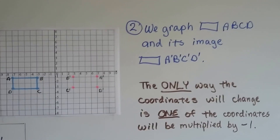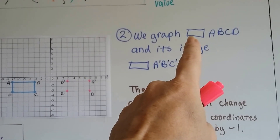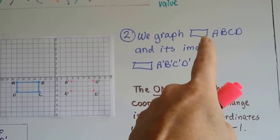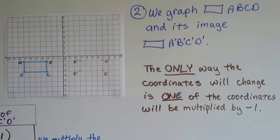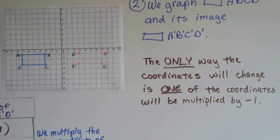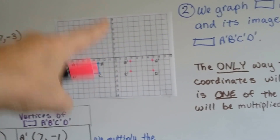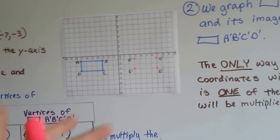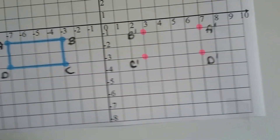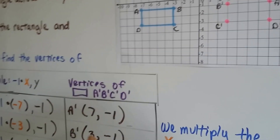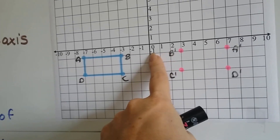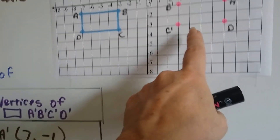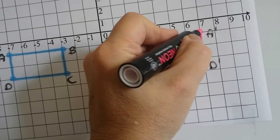Now we graph rectangle ABCD and its image A prime, B prime, C prime, D prime. The only way the coordinates change is that one coordinate is multiplied by negative 1. Because we were going across the y-axis, we multiplied the x — the opposite coordinate. Our new points are: A prime (7, -1), B prime (3, -1), C prime (3, -3), and D prime (7, -3). Now all we have to do is connect them and we've got our image.